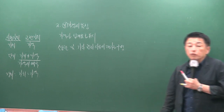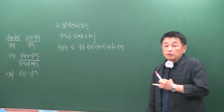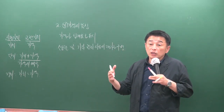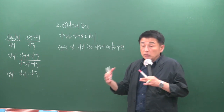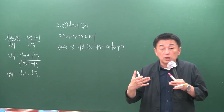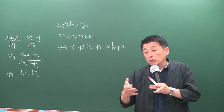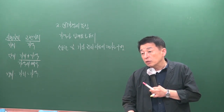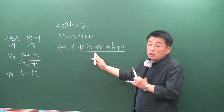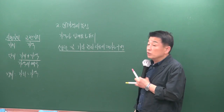부동산 가격은 소유권 및 기타 권리익의 대가로 구성됩니다. 하나의 물건에 둘 이상의 권리익이 존재할 수 있습니다. 부동산을 소유하면 소유권이 있고, 세를 주면 전세권 설정이 될 수 있으며, 담보로 대출을 받으면 저당권이 설정될 수 있습니다. 둘 이상의 권리익이 설정될 수 없다고 하면 틀린 지문입니다.